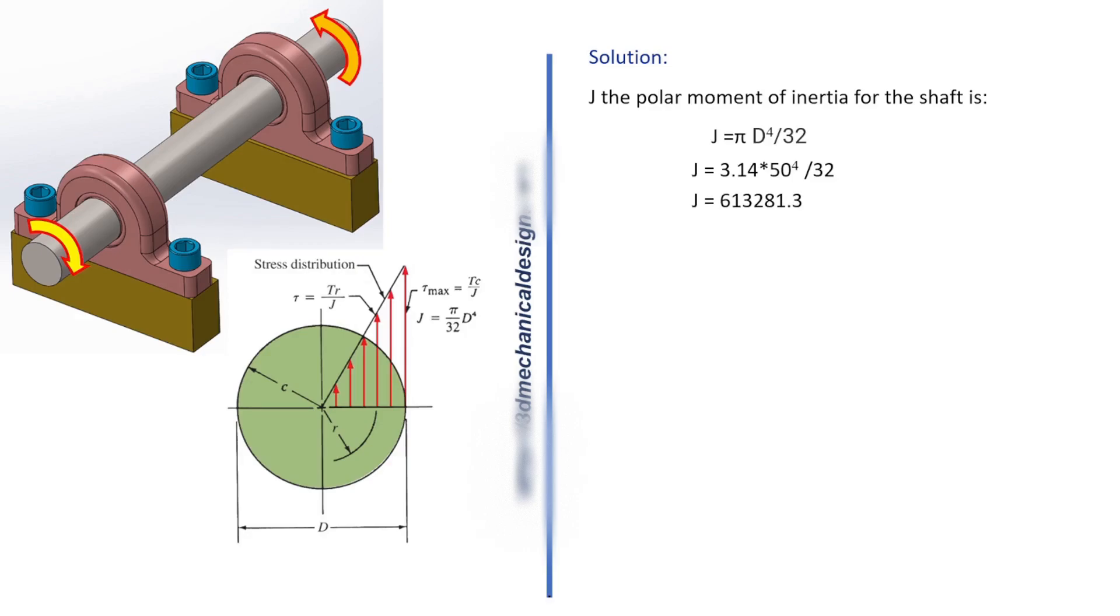The torsional shear stress. τ max equals T times C divided by J. C radius equals 50 millimeters divided by 2 equals 25 millimeters. 70 newton meters equals 70 times 1,000 equals 70,000 newton millimeters. 1 meter equals 1,000 millimeters.